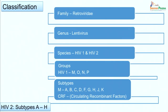Coming to the classification of HIV: this virus belongs to the family Retroviridae. Viruses in this family possess the enzyme reverse transcriptase. Normally transcription occurs from DNA to RNA, but reverse transcriptase can cause transcription in the reverse direction, that is, RNA to DNA. HIV belongs to the genus Lentivirus, meaning slow virus — the incubation period is long and symptoms become apparent only after a very long duration of infection.